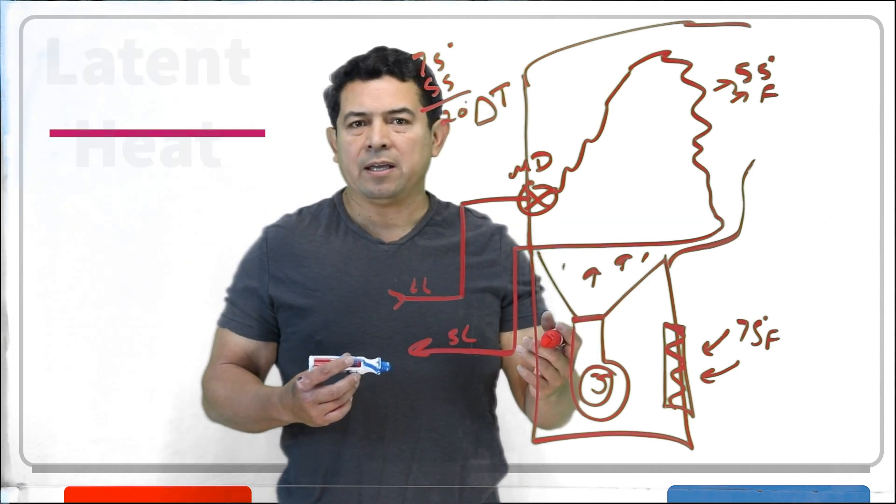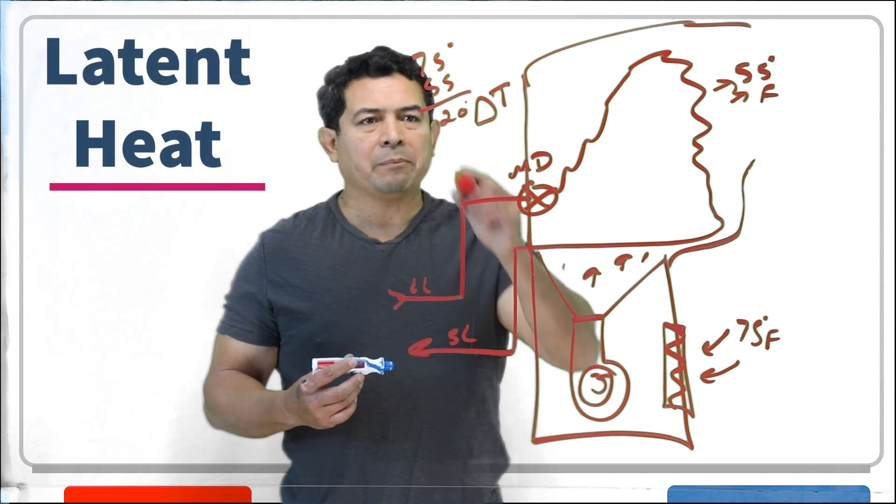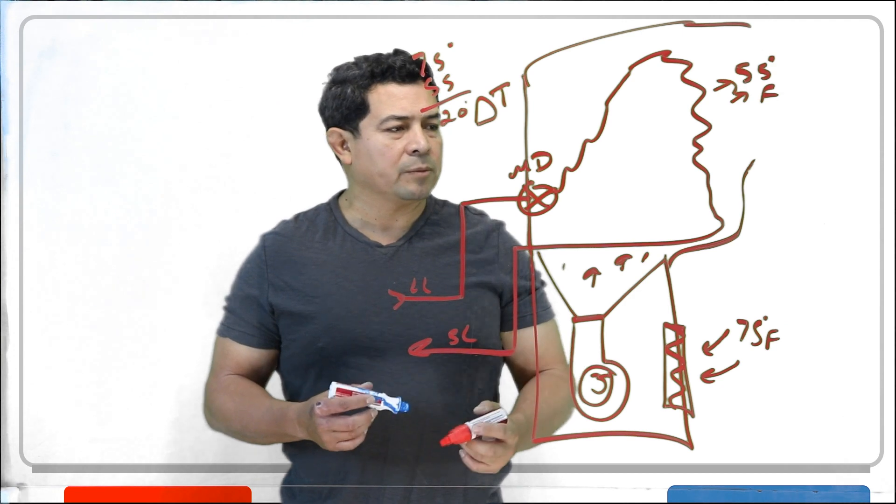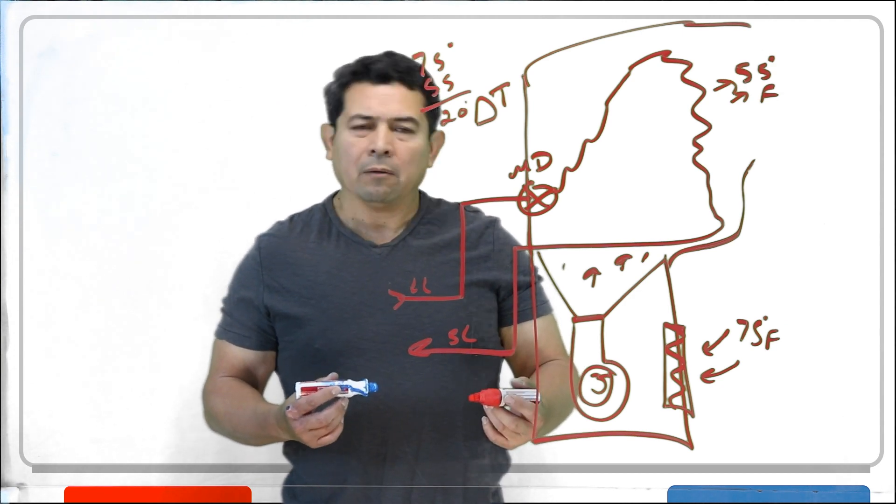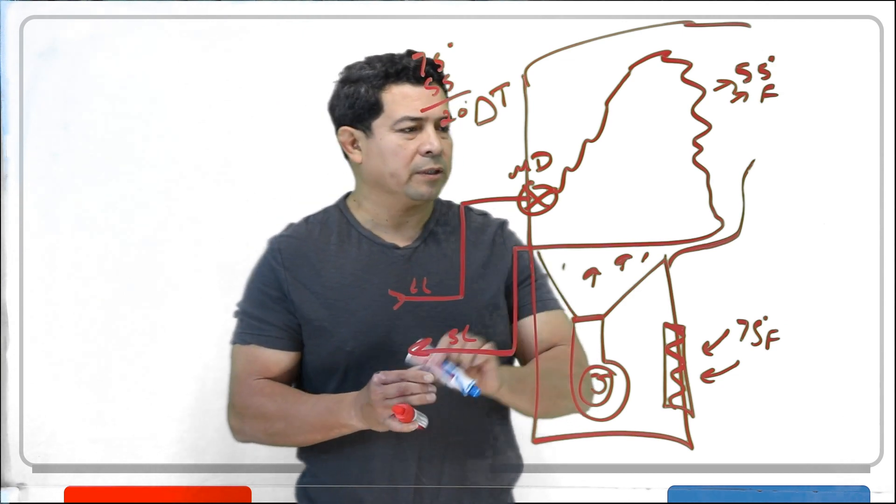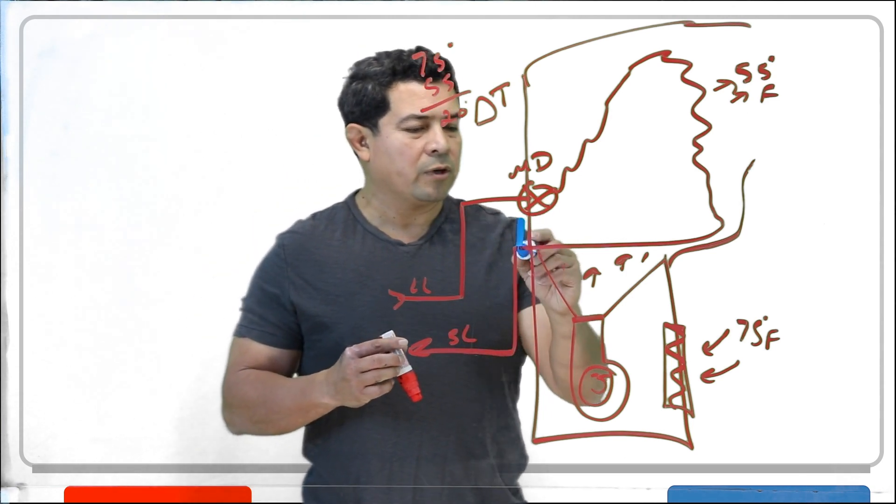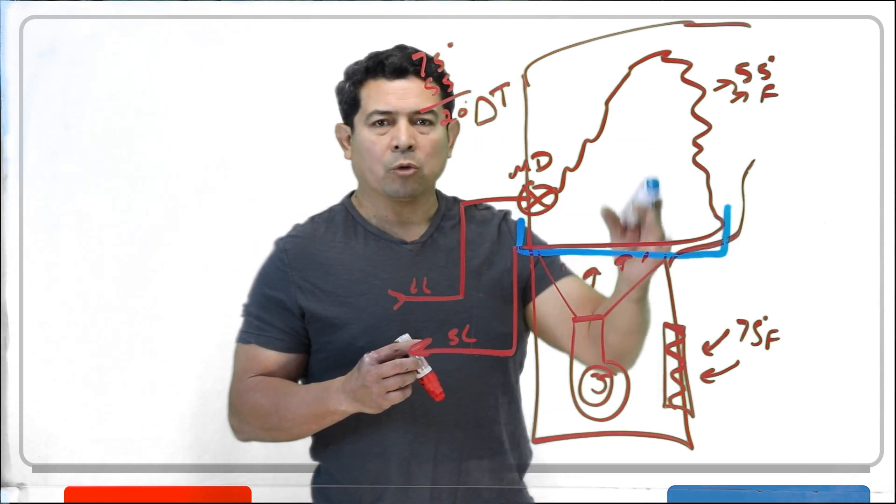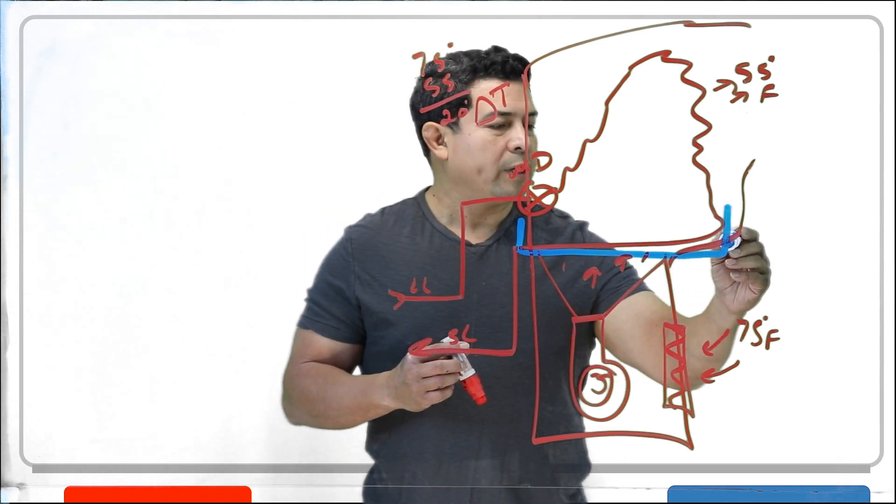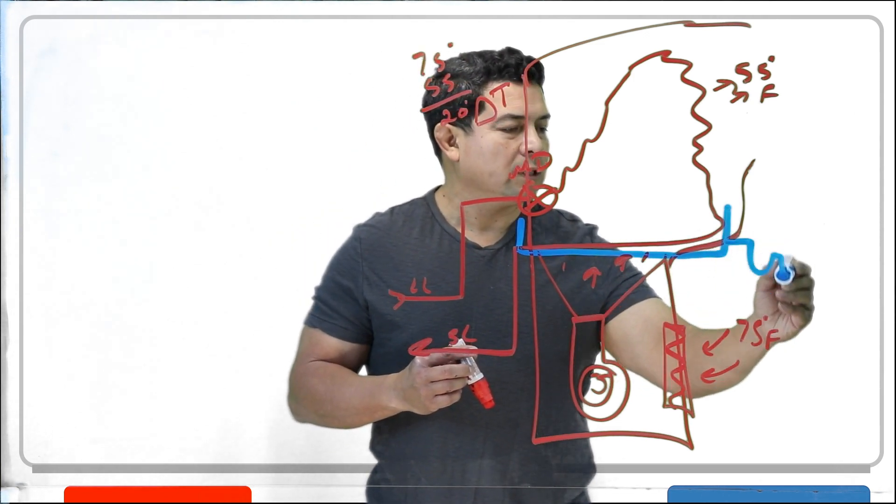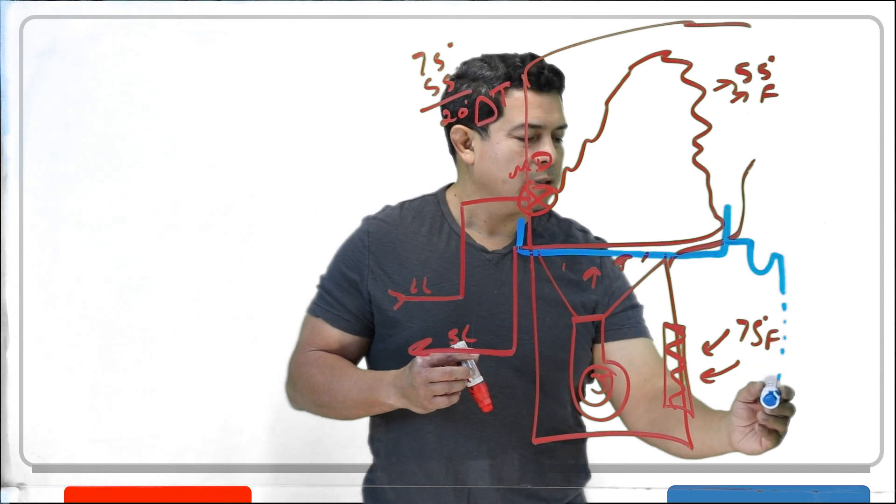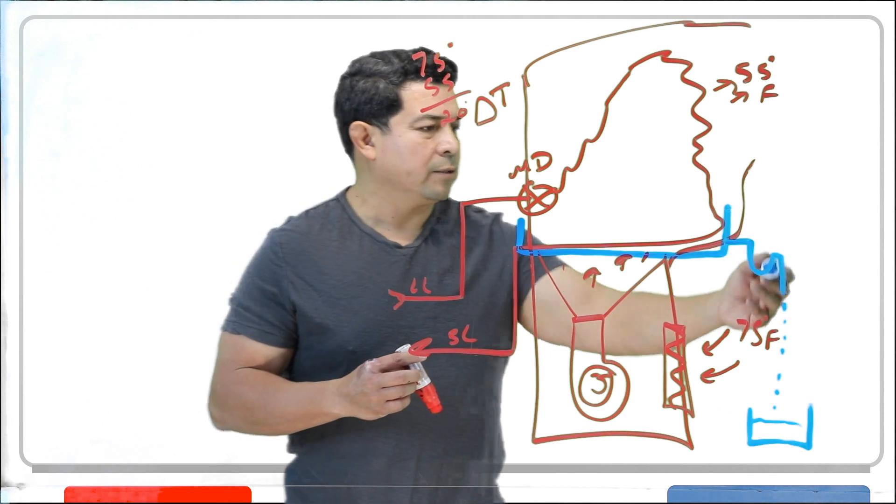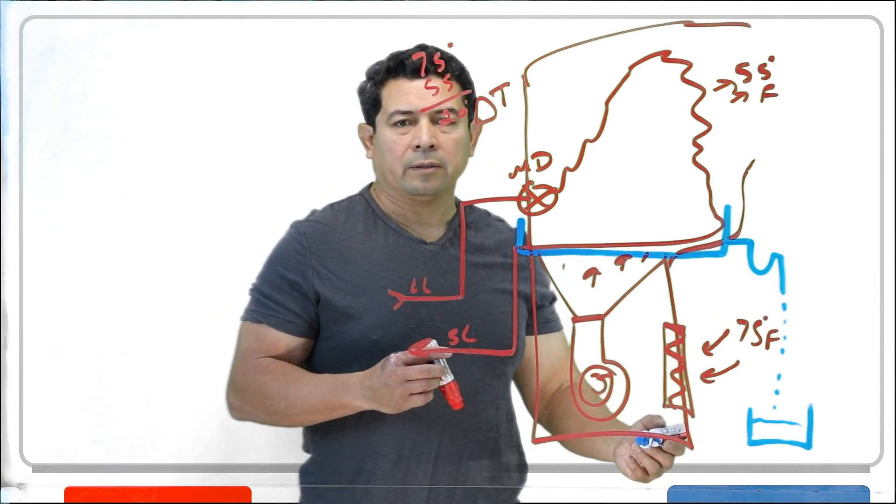But what about latent heat? Latent heat we cannot measure with a thermometer. So how do we know that this is absorbing latent heat? Well, it's very simple. Because typically, underneath the unit here, we're going to have a drain pan. It's going to absorb all of the moisture. When the moisture collects, it comes out through the drain right here.